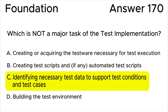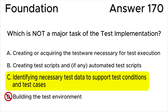All the other answers are wrong because they are major tasks of test implementation. Answer A is wrong because creating or acquiring the testware necessary for test execution is a major task of test implementation. Answer B is wrong because creating test scripts and if any automated test scripts is also a major task of test implementation.